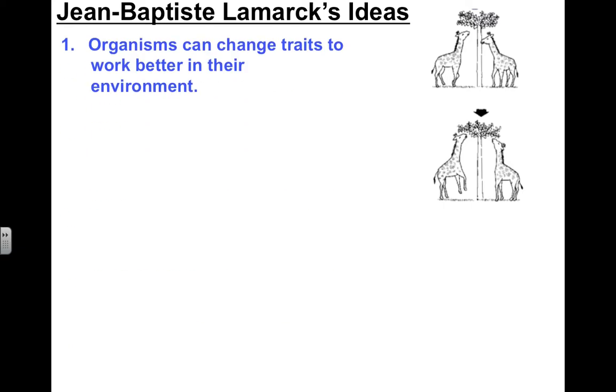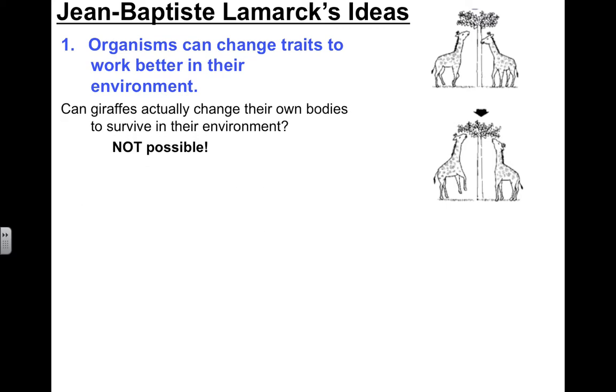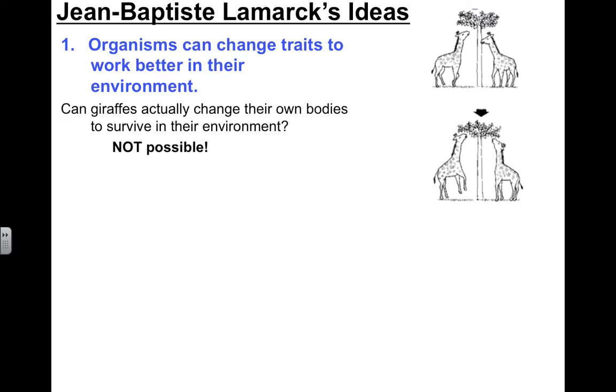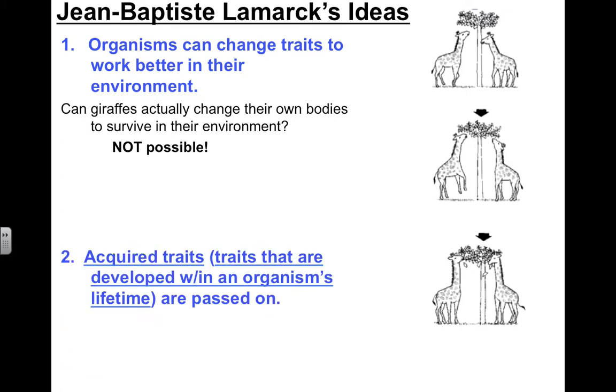Not everyone agreed with Charles Darwin's ideas. John Baptiste Lamarck had different ideas of how organisms change over time. He believed that ancestors of giraffes all had short necks, but they had a habit of eating leaves high up on trees. As they reached for leaves high up, their necks became stretched and got longer. In other words, he believed that organisms could change their own traits to work better in their environment. He also believed that giraffes whose necks had stretched — we call this an acquired trait — would be able to pass it on to their offspring, which caused today's modern giraffes to have long necks.